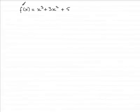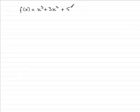Now in this part of the question we're given that f of x equals x cubed plus 3x squared plus 5 and asked to find f double dash of x, the second differential with respect to x of f of x.